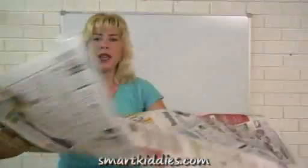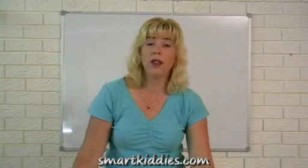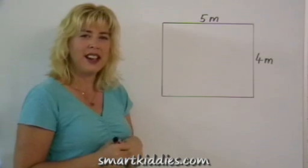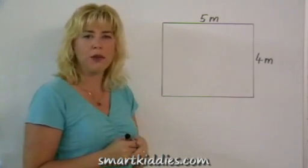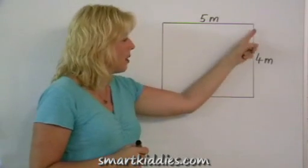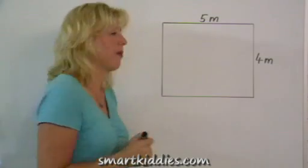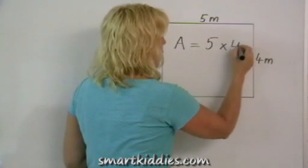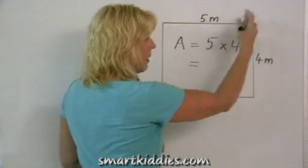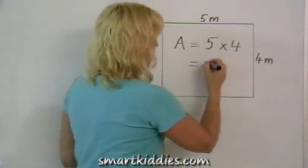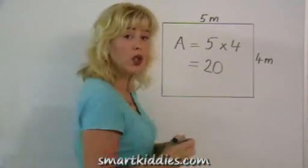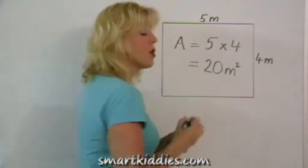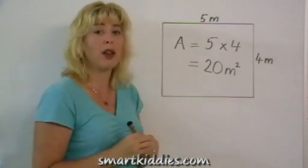If I were to put lots of these on the floor of the room, I would find that the room has quite a few square metres. So let's say the dimensions of the room are five metres by four metres. Area equals five times four — that's the length times the width — four fives are 20. So the area is 20 m² — the little superscript two tells us it's square metres.